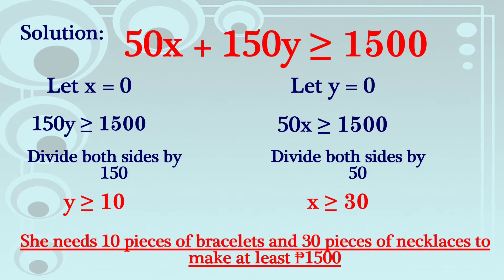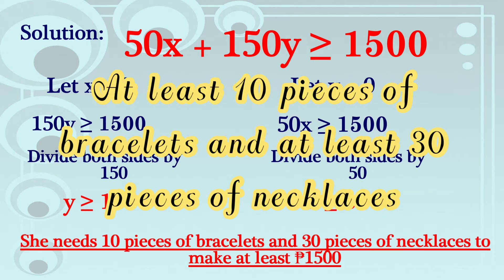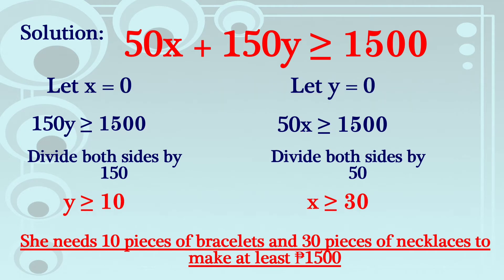So para makabuo si Jillian ng 1,500 pesos, kailangan niya ng 10 piraso ng bracelets at 30 piraso ng necklaces — she needs to sell 10 pieces of bracelets and 30 pieces of necklaces to make at least 1,500 pesos. Yan ang answer sa ating problem solving number 1.